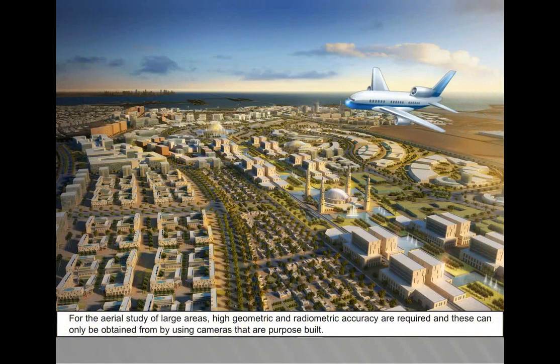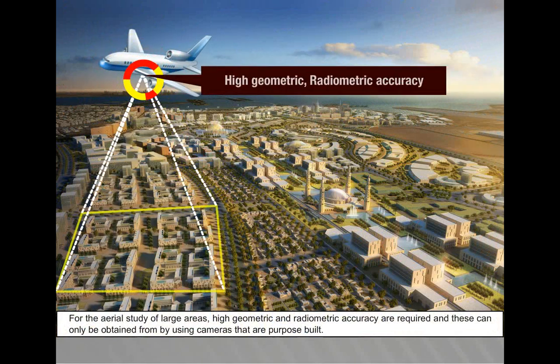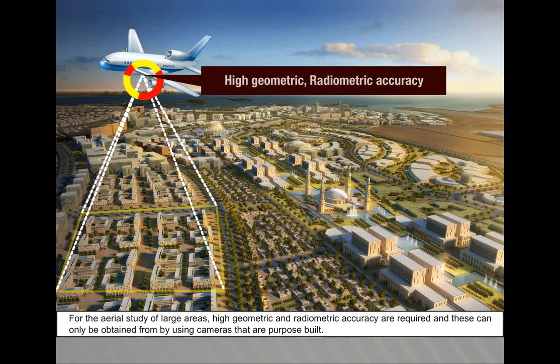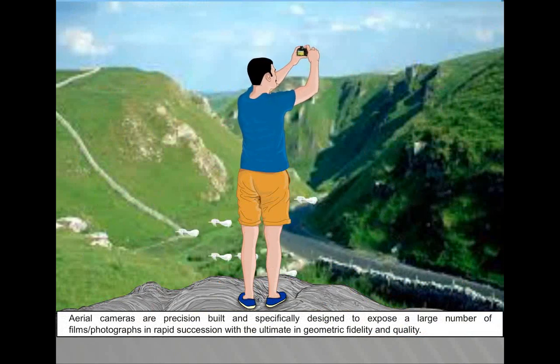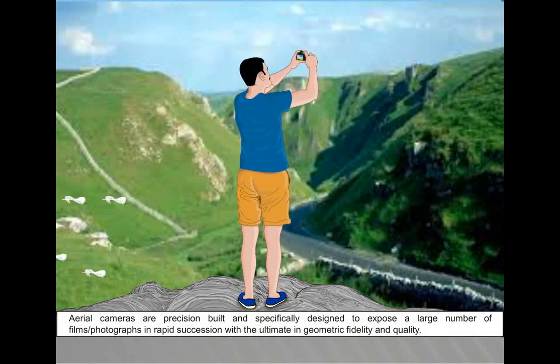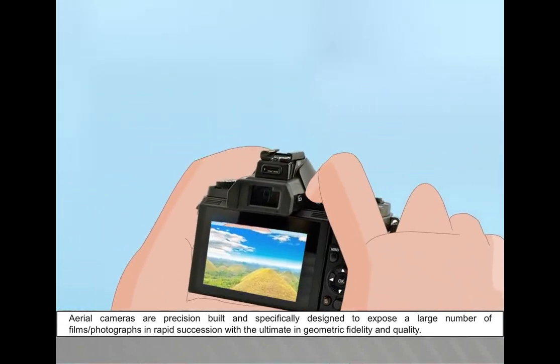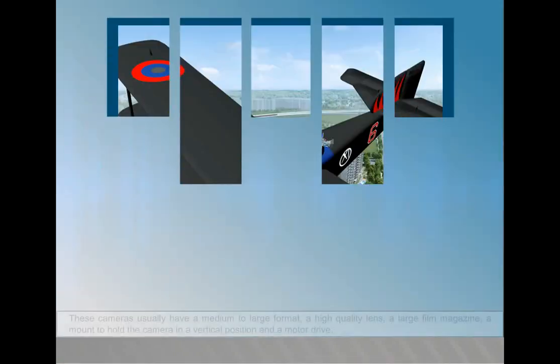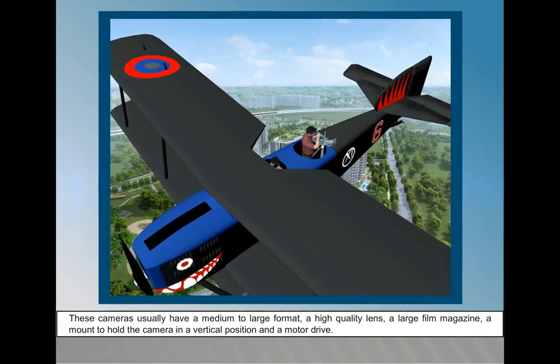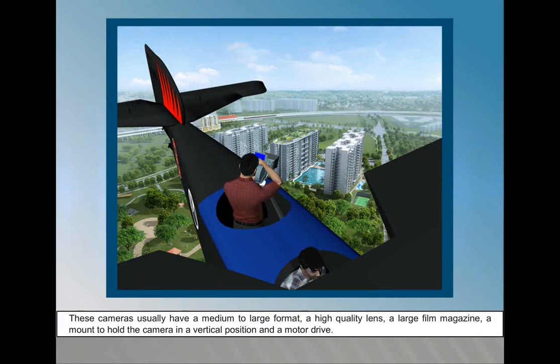For the aerial study of large areas, high geometric and radiometric accuracy are required, and these can only be obtained by using cameras that are purpose-built. Aerial cameras are precision-built and specifically designed to expose a large number of films in rapid succession with the ultimate in geometric fidelity and quality. These cameras usually have a medium to large format, a high-quality lens, a large film magazine, a mount to hold the camera in vertical position, and a motor drive.